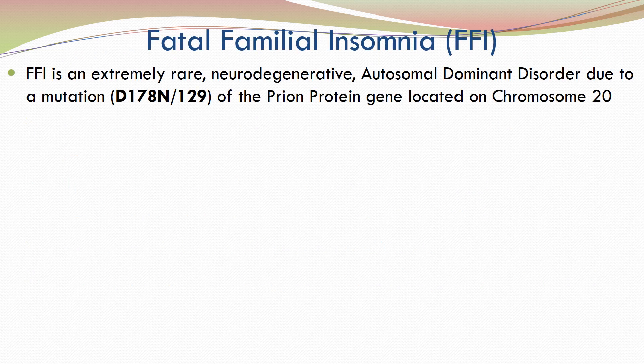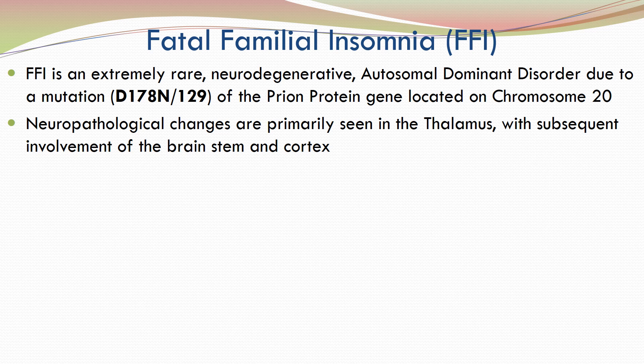Fatal familial insomnia is an extremely rare neurodegenerative autosomal dominant disorder due to a mutation of the prion protein gene located on chromosome 20. Neuropathological changes are primarily seen in the thalamus with subsequent involvement of the brain stem and cortex.